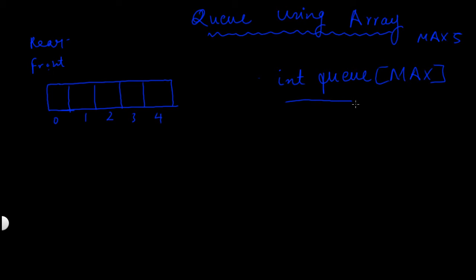To implement a queue using an array, we need to make this array named queue behave like a queue, and we can do that by following the property of a queue: elements can only be inserted from the rear end of the queue and elements can only be deleted from the front end of the queue.